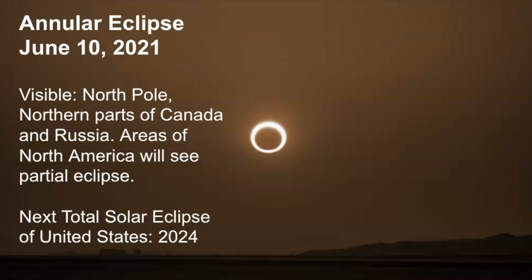On June 10th, 2021, there will be an annular eclipse. This is when it won't be visible from everywhere on the globe, because it's a narrow pathway that the eclipse travels from. But it will be seen from the North Pole, northern parts of Canada and Russia. And there are some areas in North America that you'll see a partial eclipse. The next total solar eclipse in the United States, which is where I live, is in 2024. So perhaps I'll be making plans to go see that one as well.